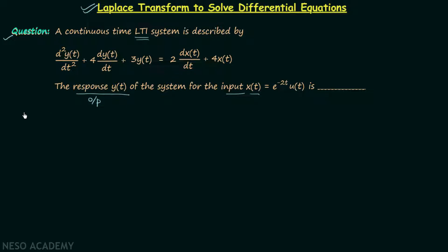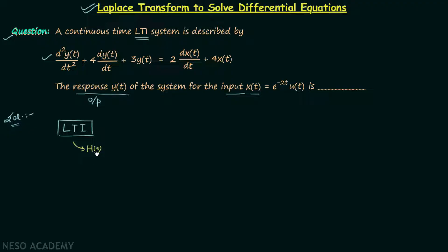The question is straightforward: the LTI system is described using a differential equation, the input is given, and using these two pieces of information we are required to calculate the output. We already know an LTI system can be described using the transfer function H(s), and we can also describe it using a differential equation as in our question.